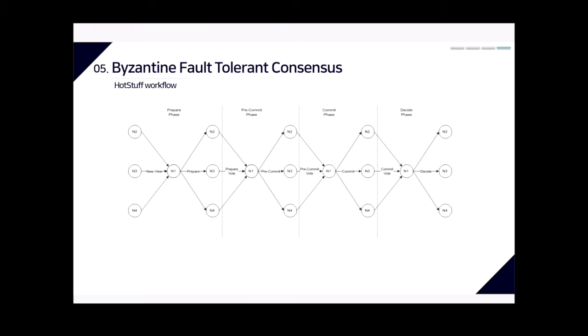This figure shows the HotStuff protocol procedure. In each phase, the leader periodically collects messages from other replicas. This star topology reduces communication cost compared to PBFT. In every phase, the leader collects messages to form quorum certificates, and replicas respond to the leader by voting.